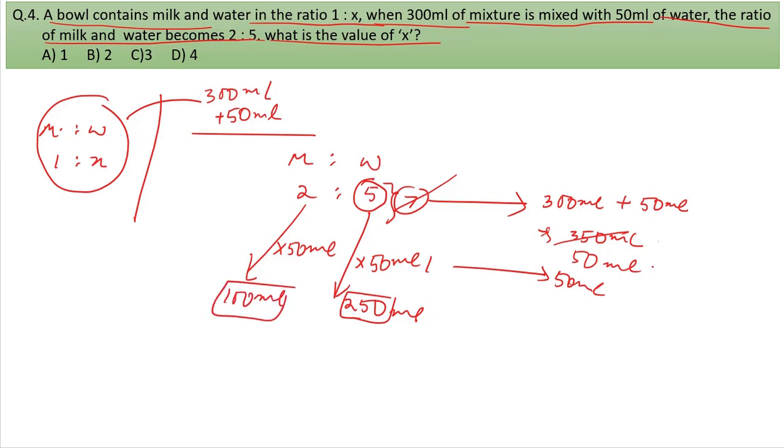Water is 5 units, so 5 times 50 equals 250 ml. But we added 50 ml of water, so originally there was 250 minus 50 equals 200 ml of water in the 300 ml mixture.